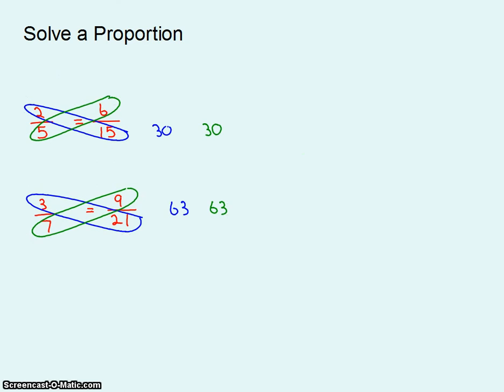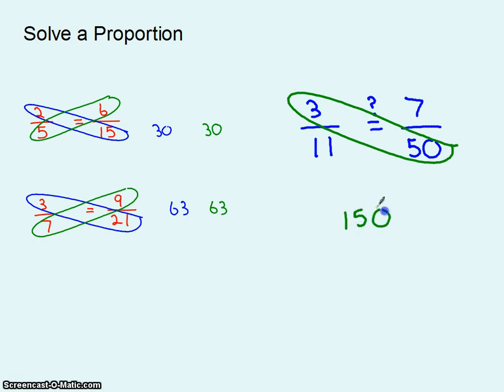And so a question that's frequently asked is this. Are 3 elevenths and say 7 fiftieths equal to each other? Well the only way they could be equal to each other is if their cross products are equal. Is it true that that multiplied together, which is 150, equals that multiplied together? Nope. So they're not equal. So we're going to take advantage of that fact when we solve a proportion.